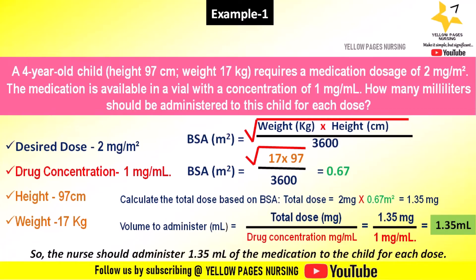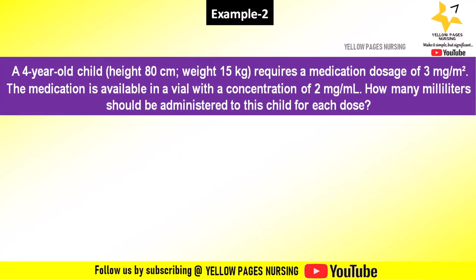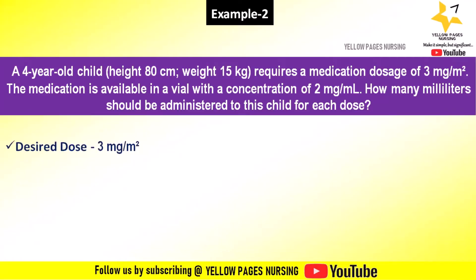Let's do another example. A four-year-old child with a height of 80 centimeters and weight of 15 kilograms requires a medication dosage of 3 milligrams per meter squared. The medication is available in a vial with a concentration of 2 milligrams per ml. How many milliliters should be administered to this child for each dose? The desired dose is 3 milligrams per meter squared and drug concentration is 2 milligrams per ml.